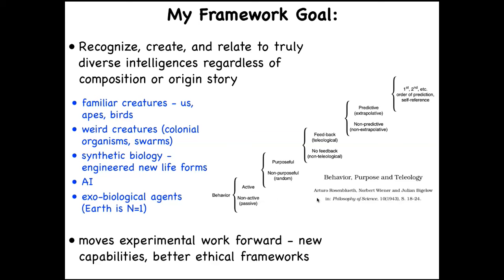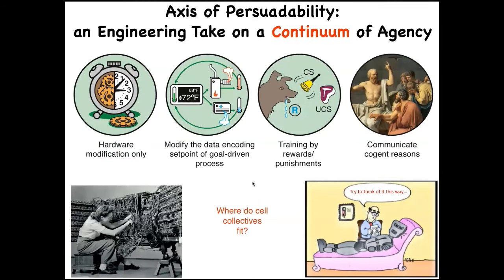Rosenbluth, Wiener, and Bigelow's cybernetic scale from the 1940s goes from passive matter up through various categories — phase transitions that allow novel functionality and behavior to arise — while recognizing this is a continuum. From an engineering perspective, cognitive claims about any system are really engineering protocol claims: what tools can we deploy to interact with it optimally?